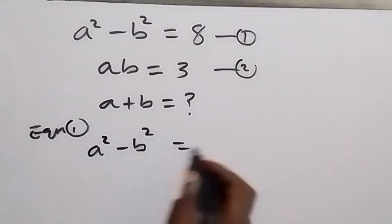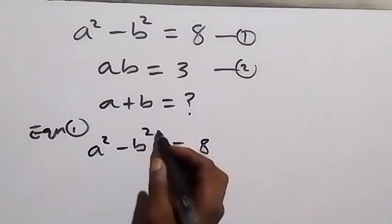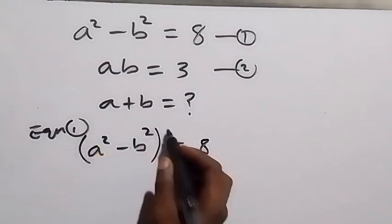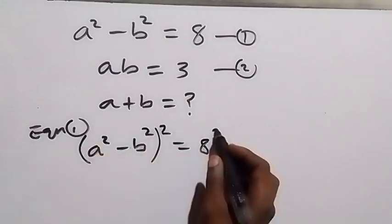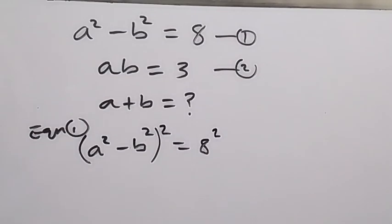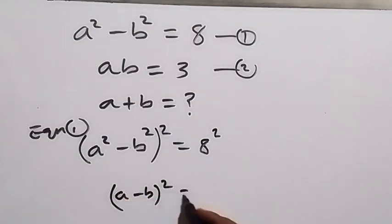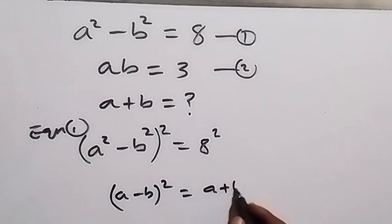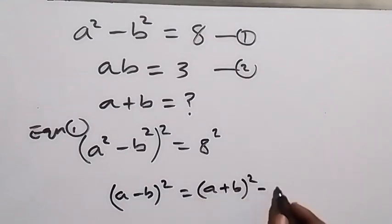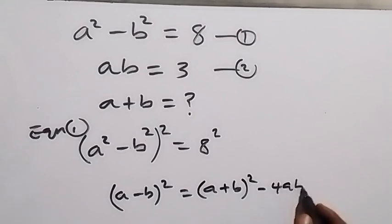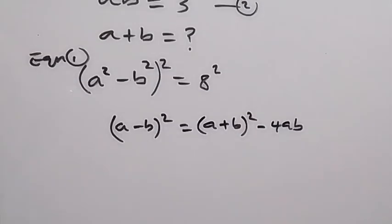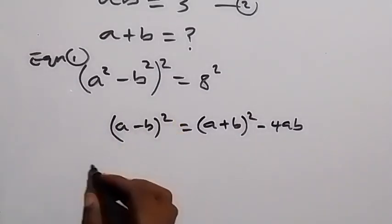From equation 1, equals to 8. Let's square both sides of equation 1 — we square this side also, and we square the other side. From the identity, when we have a minus b squared, we can write this as a plus b squared minus 4ab.